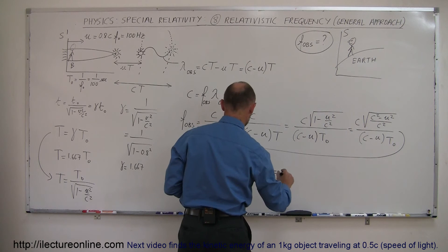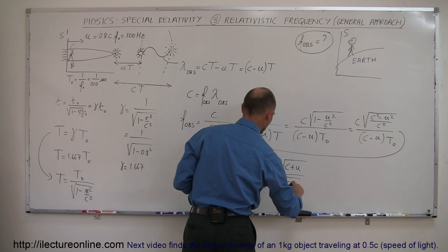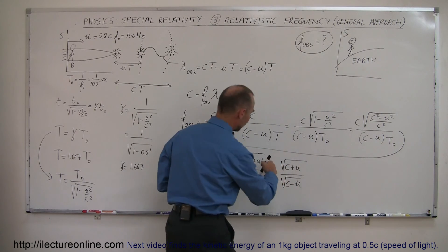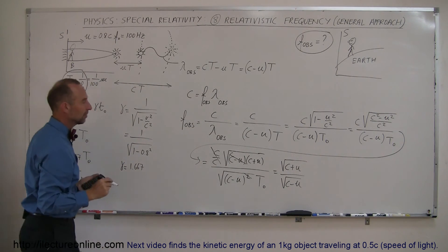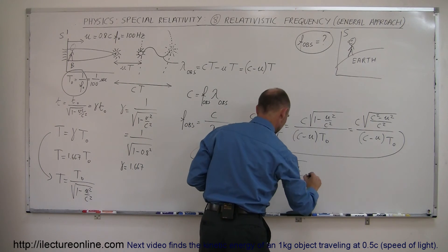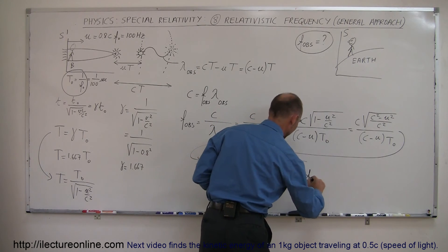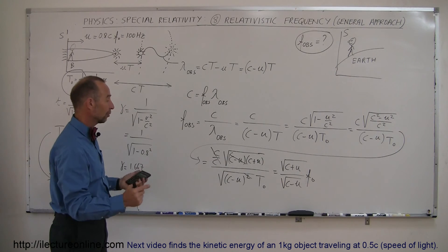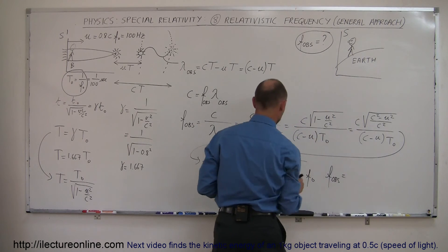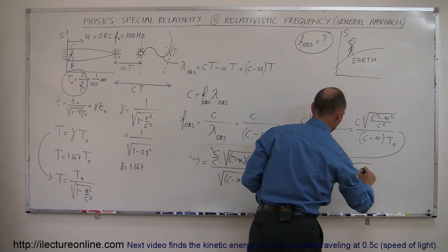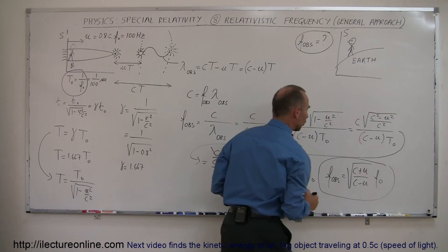Finally, we can say the observed frequency equals the square root of C plus U over the square root of C minus U, times 1 over T-naught. And since 1 over T-naught equals F-naught, the frequency as seen by the observer on the spaceship, we arrive at the relativistic Doppler formula: the frequency observed by the stationary observer equals the square root of (C plus U) divided by (C minus U), times the frequency as seen by the observer on the spaceship.